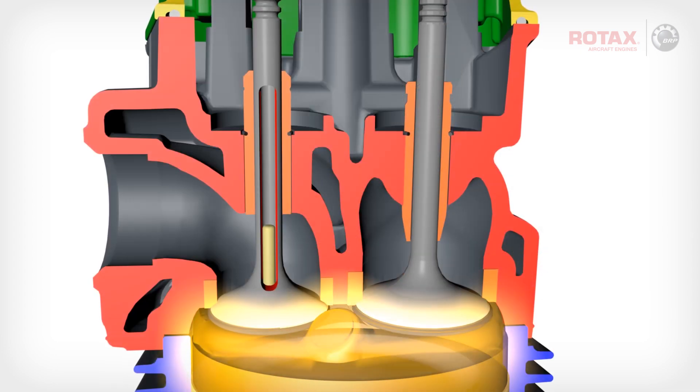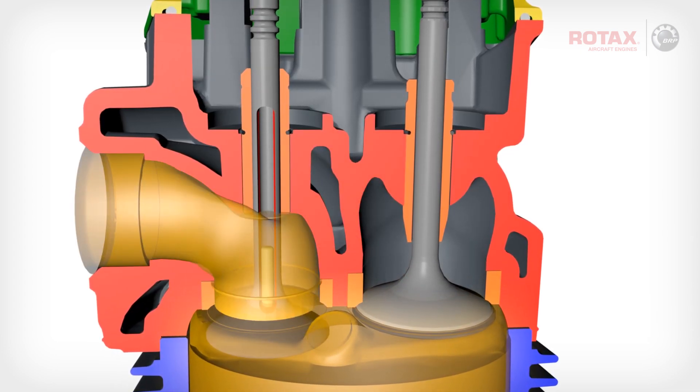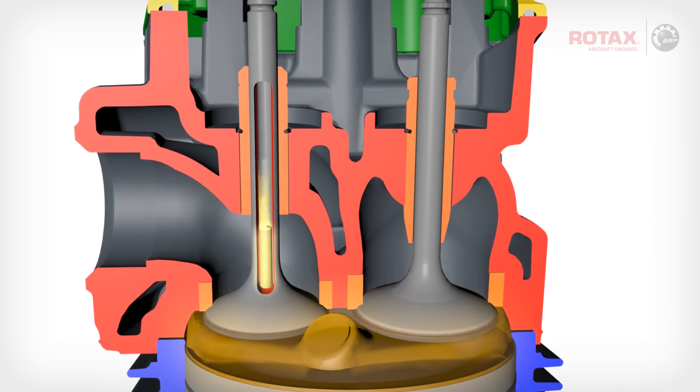When the engine is running and the exhaust valve heats up, the sodium sealed within will melt, and as the temperatures increase, will boil and turn into a vapor.